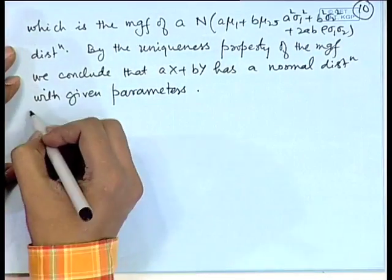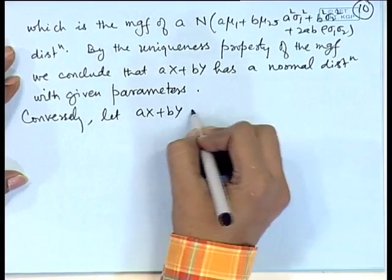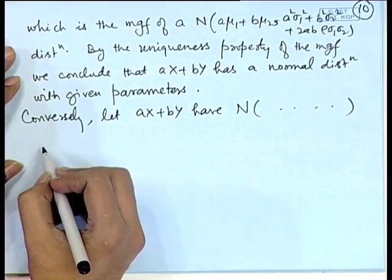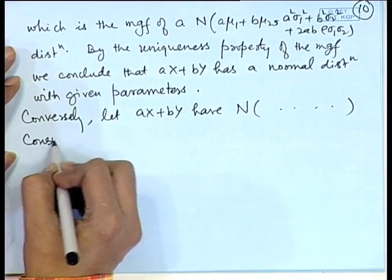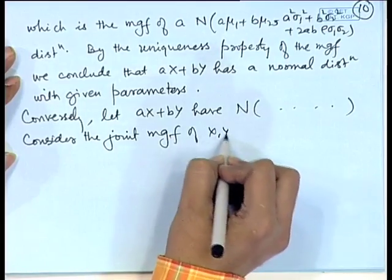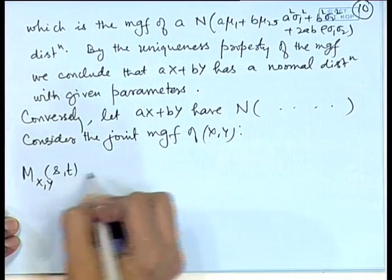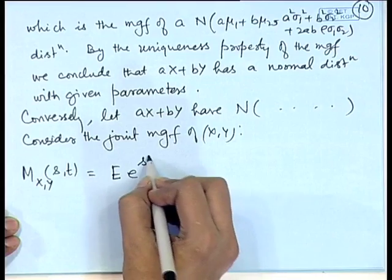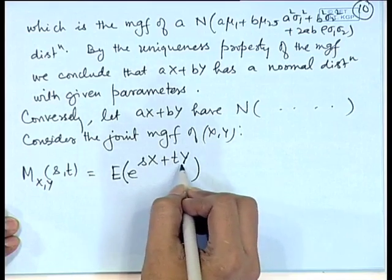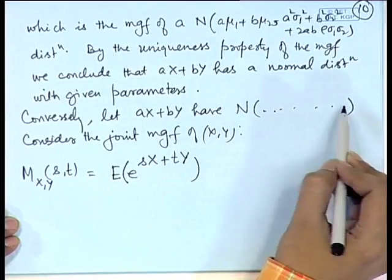Conversely, assume that AX + BY has a normal distribution with the desired parameters for all real A, B. Consider the joint MGF of X, Y: M_{X,Y}(s,t) = E[e^{sX + tY}]. Notice that sX + tY is itself a linear combination of X and Y, and we are assuming every linear combination has a univariate normal distribution with the desired parameters.